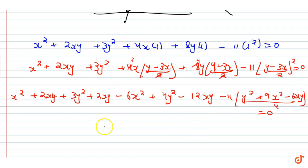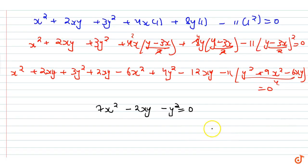Then my final equation is: 7x² − 2xy − y² = 0. This is a pair of straight lines passing through the origin.